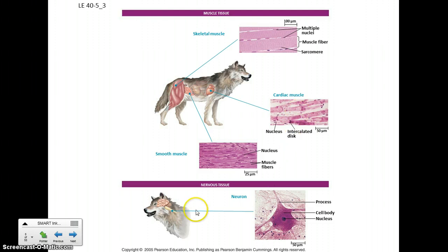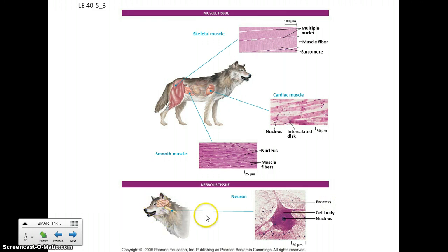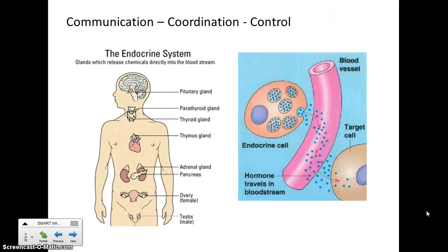Nervous tissue is part of the nerve network used to send electrochemical signals around your body, connected to sensory organs like your eyes, nose, and ears, taking information in. Then you have neurons that take the information back out to your extremities to elicit some sort of response.